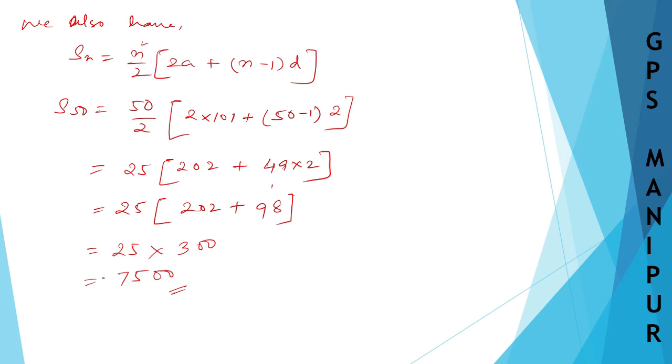So the sum, the answer, the sum of all the odd numbers between 100 and 200 is 7500. I hope the answer is correct. That's all, thank you so much. We will meet in the next video.